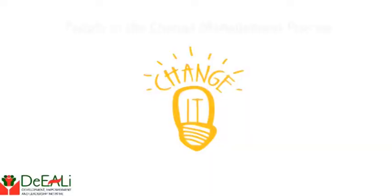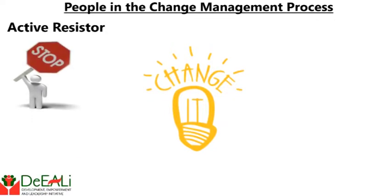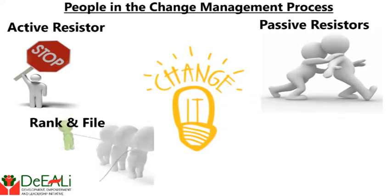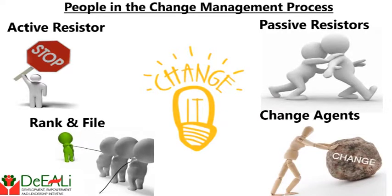So you communicate, communicate, communicate. But when you are communicating, you need to be aware that in that audience there are four different types of people: the active resource store, the passive resource store, the rank and file, and the change agent. These four different types of people hear your message differently, will respond differently, and you too need to respond to them differently.